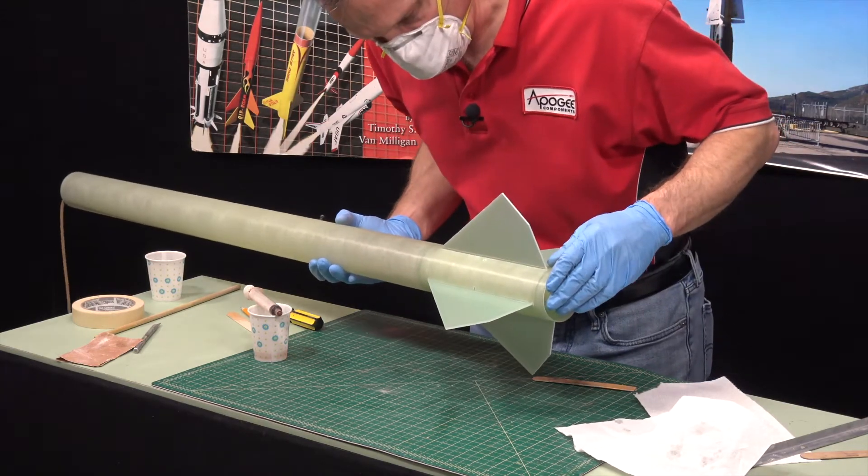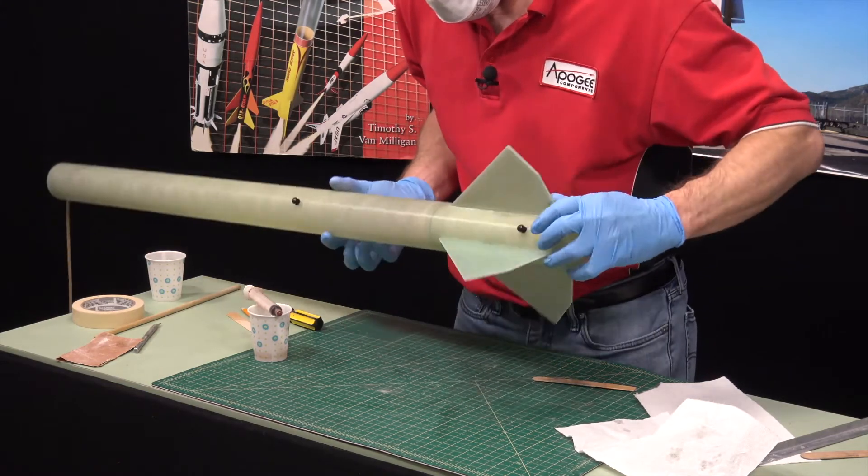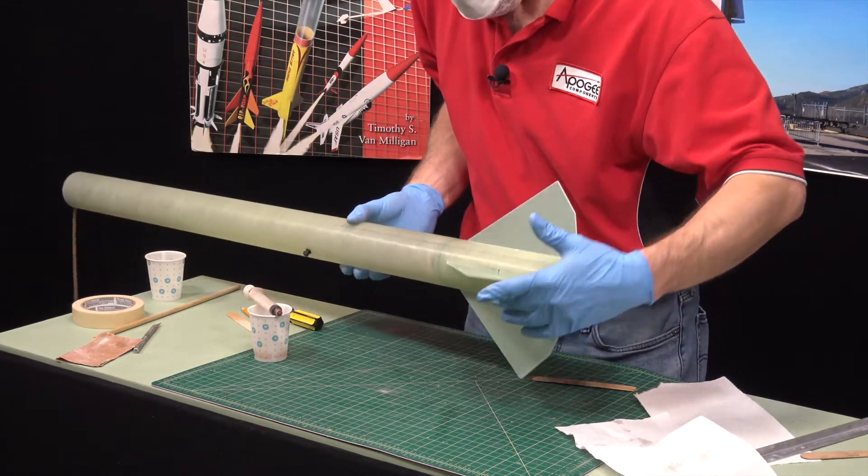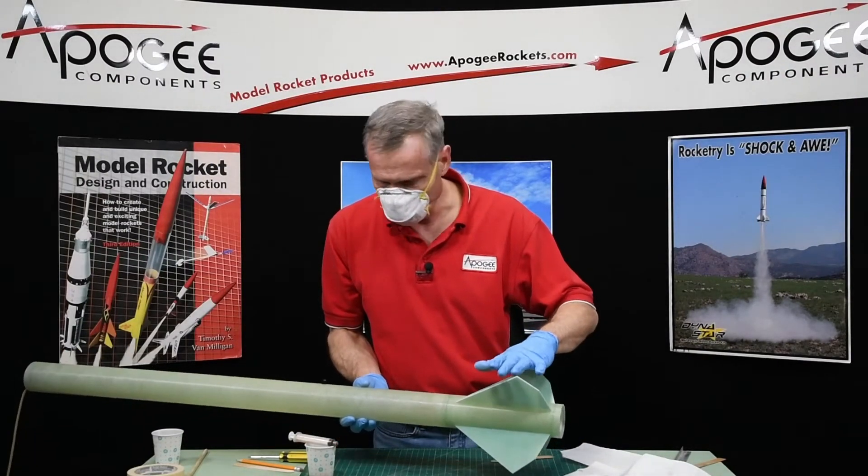The unfortunate thing is you can't do more than one fin set at a time, because if you flip it over, all that epoxy is just going to run right out of that hole. So we got to do this four times because we have four sets of fins.